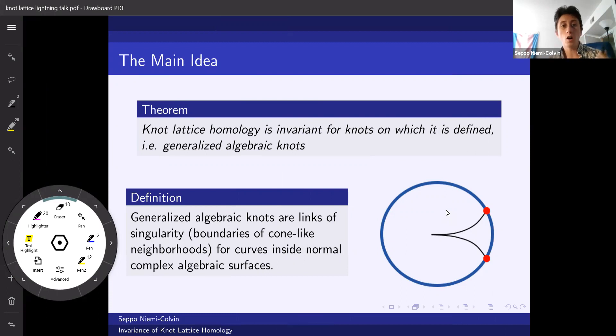However, before we go into the invariance part, we're going to discuss more about the on which it's defined part. Generalized algebraic knots are links of singularity, i.e. boundaries of cone-like neighborhoods, for curves inside normal complex algebraic surfaces.